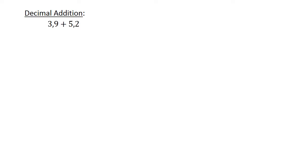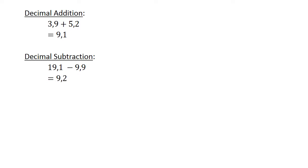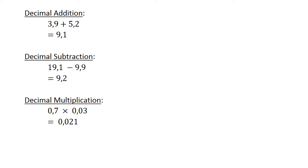Decimal Addition: 3.9 plus 5.2 equals 9.1. Decimal Subtraction: 19.1 minus 9.9 equals 9.2. Decimal Multiplication: 0.7 times 0.03 equals 0.021.